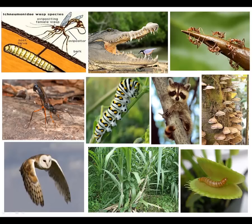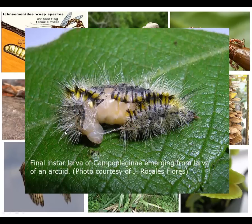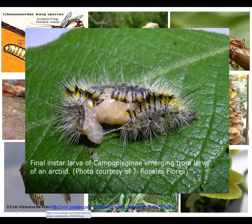And then we have parasitism — an ichneumonid wasp that actually has a very long ovipositor, producing an egg to be put into a caterpillar. You can see this one is actually putting its ovipositor into wood, searching out larvae inside there. Here's an example of that ichneumonid wasp larvae actually breaking out from the caterpillar skin. You can see it has basically eaten out the inside of the caterpillar. If you want to see an eight-minute video, you can go watch one on an ichneumonid on a blue moth found in Great Britain.